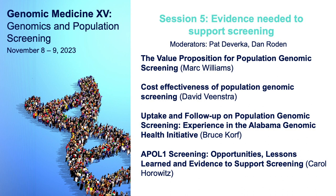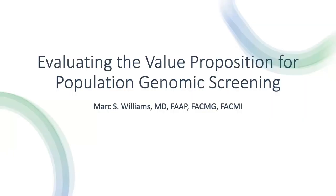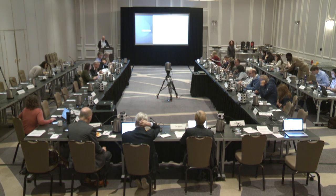Good morning, everyone. This is Session 5: the evidence needed to support screening. Dan Roden and I are going to be facilitating this. It will be the same format as yesterday — we'll have our speakers, and after the presentations we'll have ample time for questions. Our first speaker this morning is Mark Williams from Geisinger, a member of the genomic work group that organized this meeting. Mark is going to talk about the value proposition for population genomic screening.